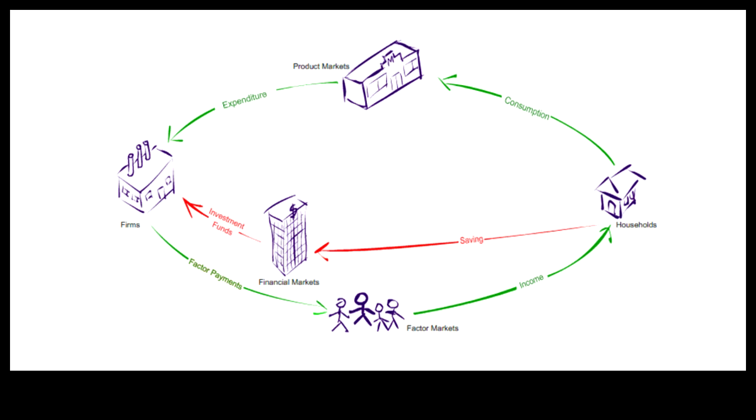The red arrows represent leakage from the circular flow. When the firms spend the investment funds in the product markets, the leakage from the spending stream is recycled back to the circular flow.